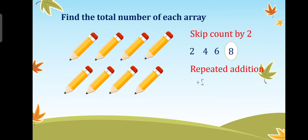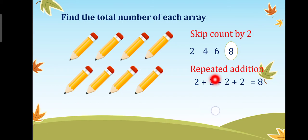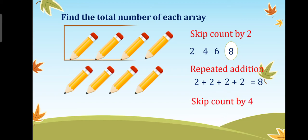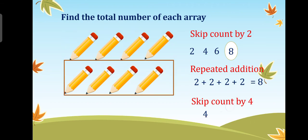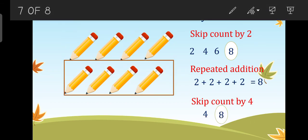By repeated addition, we have four twos: two plus two plus two plus two equals eight. Now using rows — in each row we have four items, and we have two rows: four plus four equals eight.